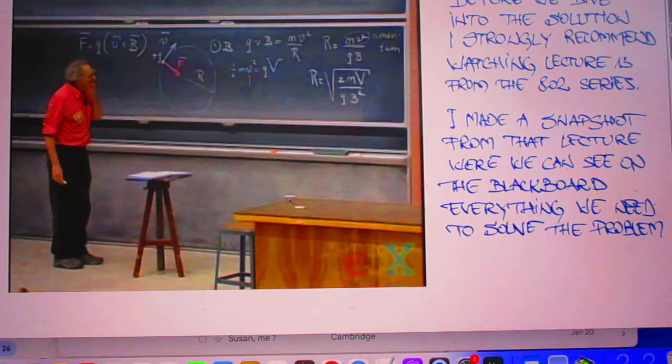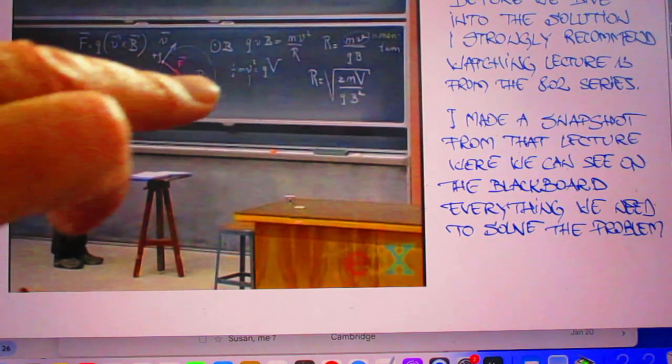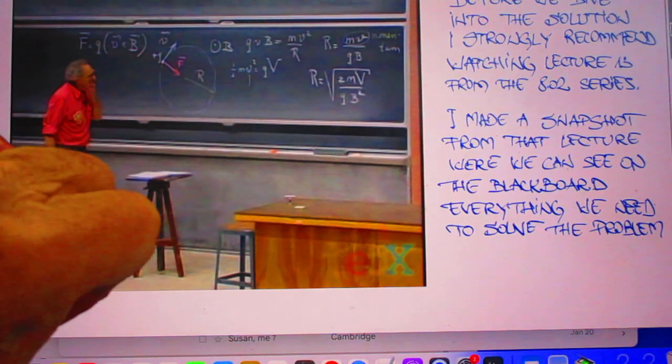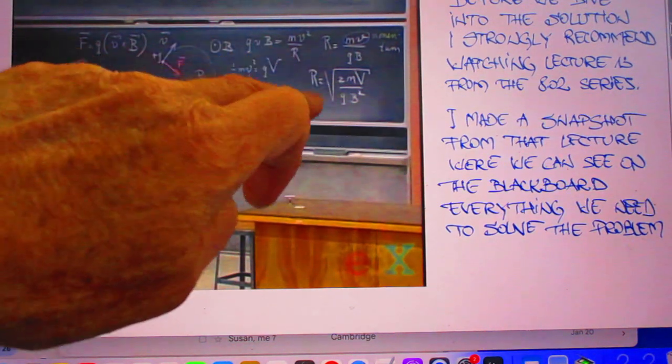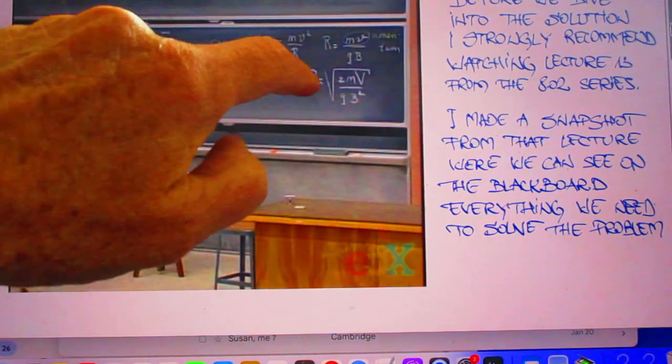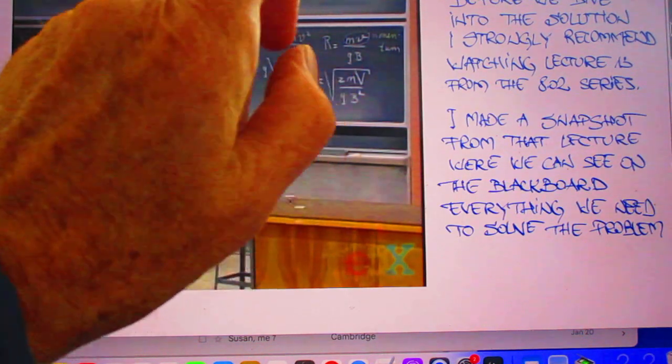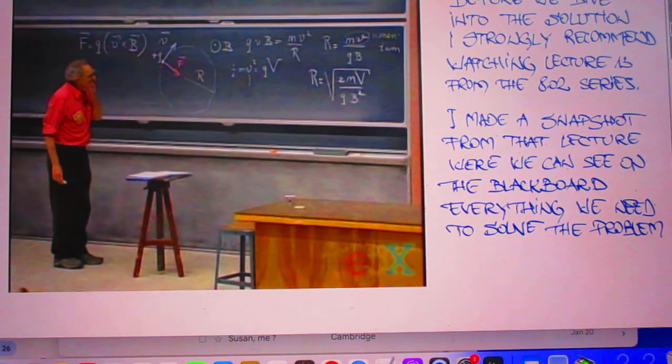And I want to ask your attention in particular to this. So this is R is the square root of 2mV over qB squared. That's really the answer. I derived it.